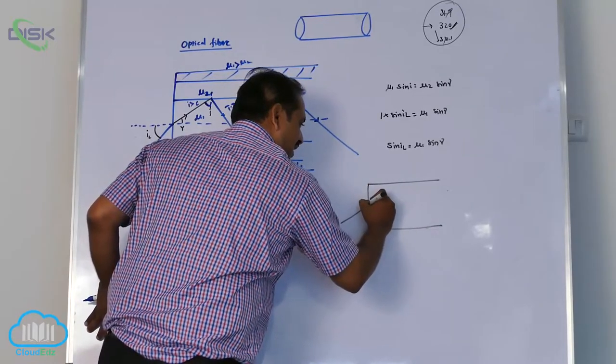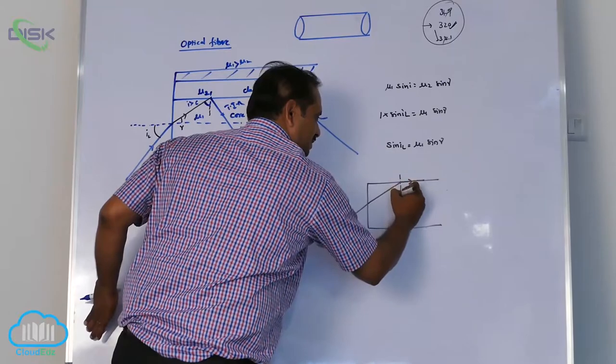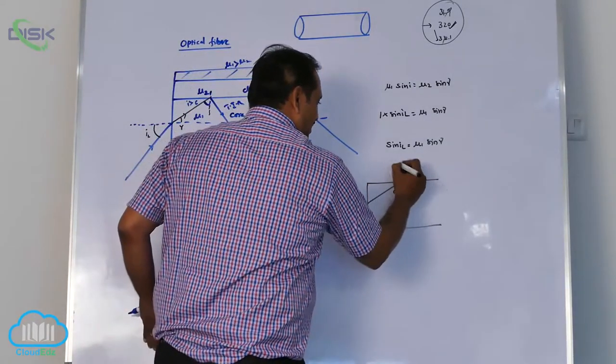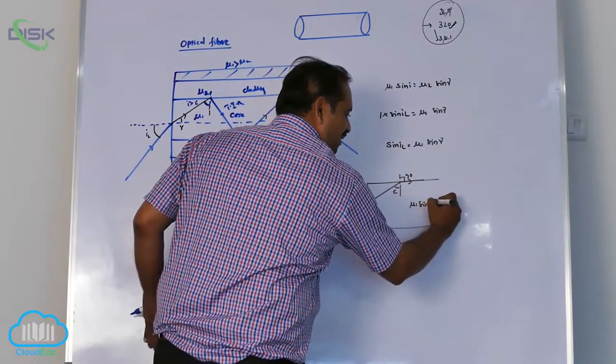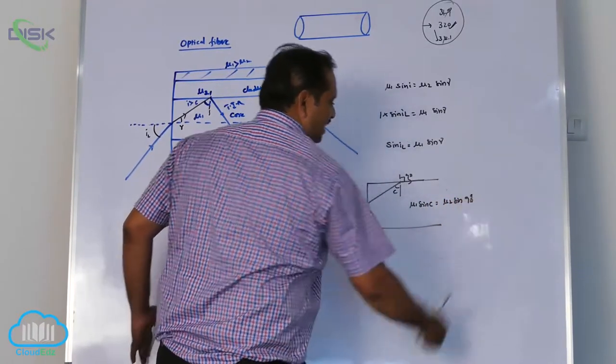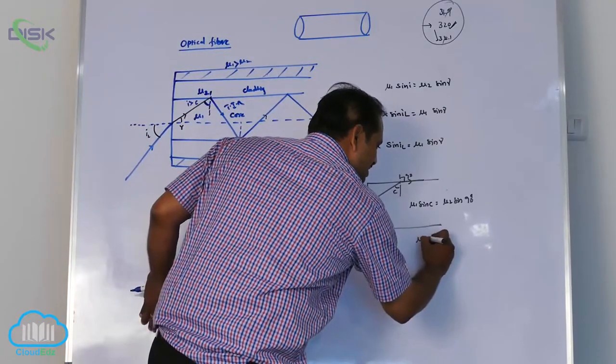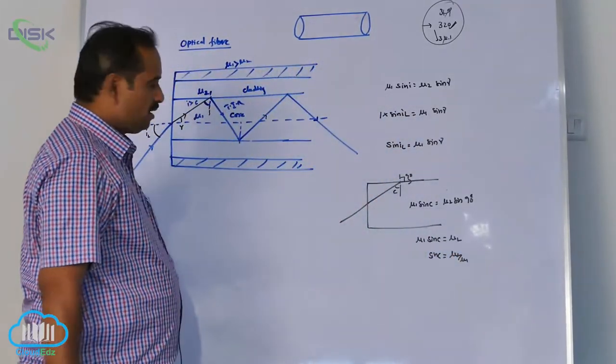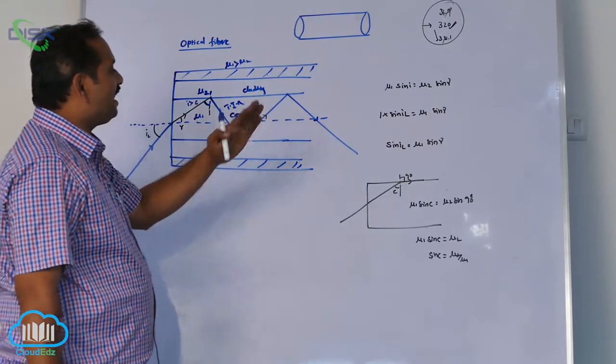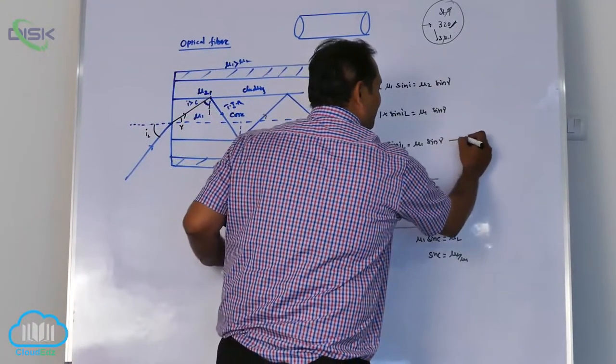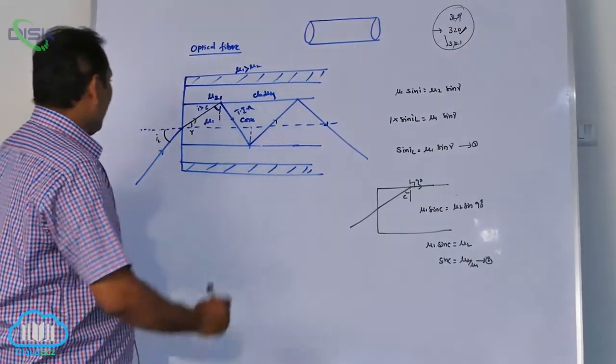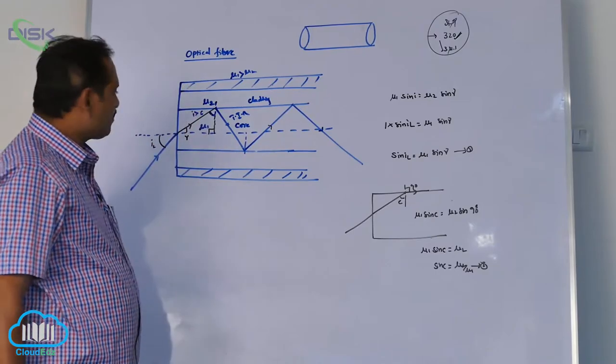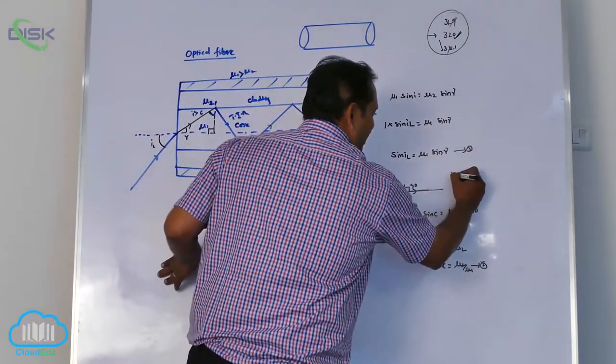The limiting condition is like this: Core, IL. This is C. This becomes 90-C. Apply Snell's law between core and cladding. That is mu1 sin C equal to mu2 sin R. Sin R is sin 90. So mu1 sin C equal to mu2, sin C equal to mu2 by mu1. But if I observe the diagram, I am not finding C term in the equation. But at right angle, R is 90-C. What I am going to get? R equal to 90 minus C.